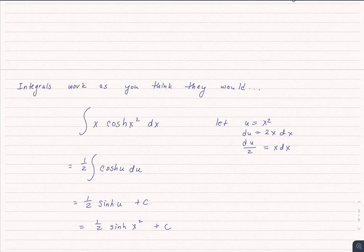So I would replace x dx with du over 2. I would go ahead and solve that. Integral of hyperbolic cosine is simply hyperbolic sine. And again, we would substitute our u back in. And don't forget the plus c. We still have plus c's.